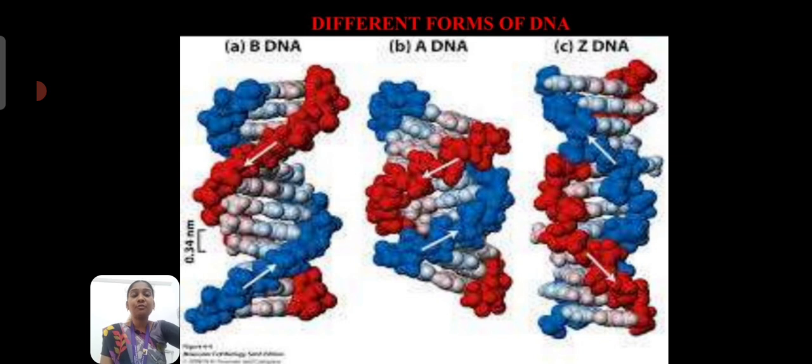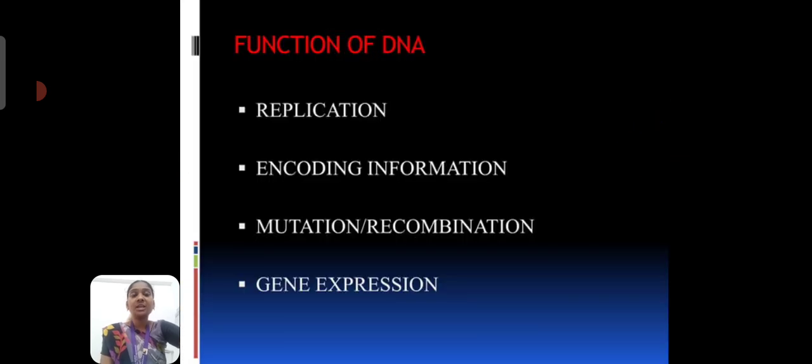The DNA is different form of structure. The example for B form of DNA, A form of DNA and also Z form of DNA. The various functions are involved in DNA. The example replication process, encoding of information, mutation and recombination and also gene expression.